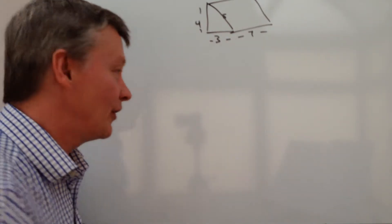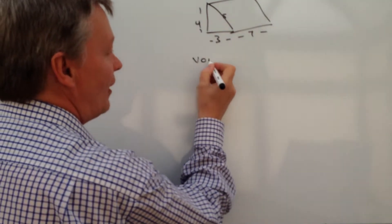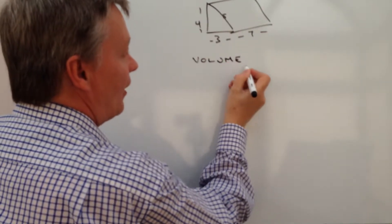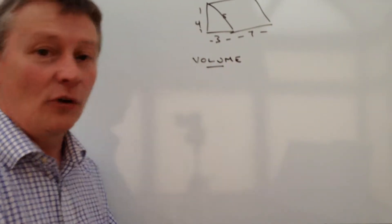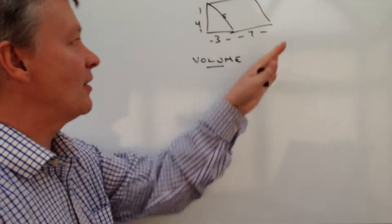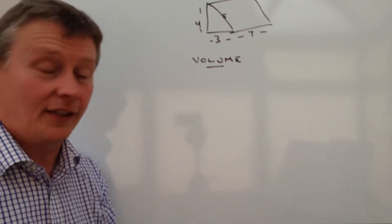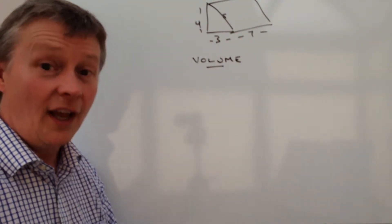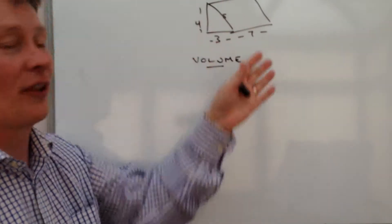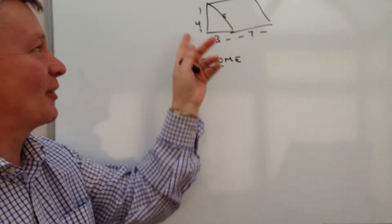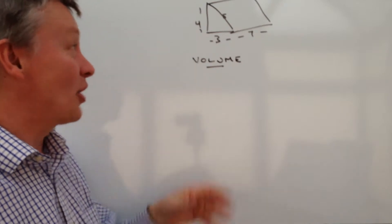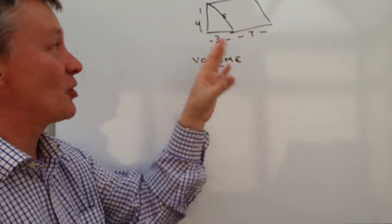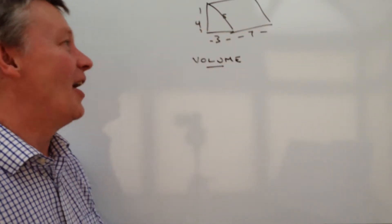However on this particular video we're going to deal with the other part of the question which is to calculate the volume. So in other words if you had something like that made out of plastic and you put a whole load of water in it, how much water would you be putting in? Or how much chocolate would you be putting in? Because these are quite like in the UK we have Toblerone which is a chocolate in a triangular box.